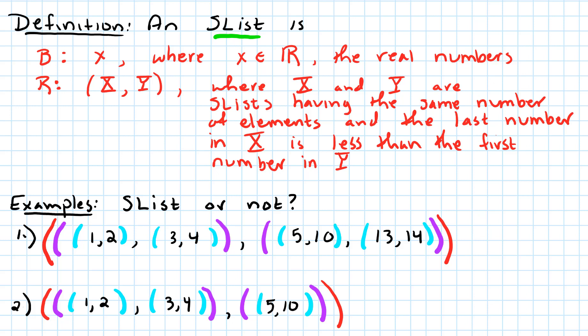Our recursive case will be X, Y. In other words, we've got two S-lists, X and Y, and each of these S-lists have the same number of elements, and the last number of X is less than the first number sitting in Y.